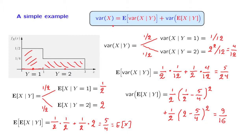Now we can apply the law of total variance: the total variance equals the expected value of the conditional variance, which is 5/24, plus the variance of the conditional expectation, which is 9/16. This evaluates to 37/48. So we have managed to find the variance of this random variable using the divide and conquer method and the law of total variance.